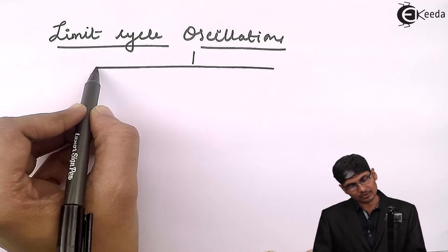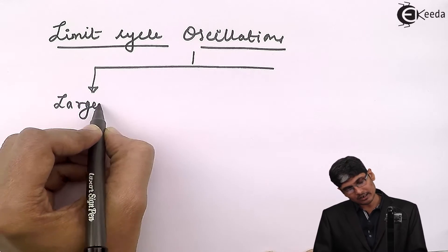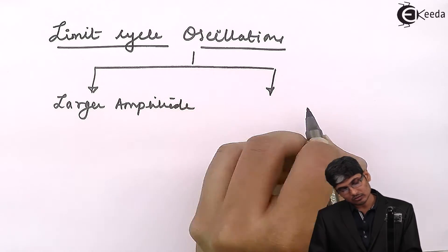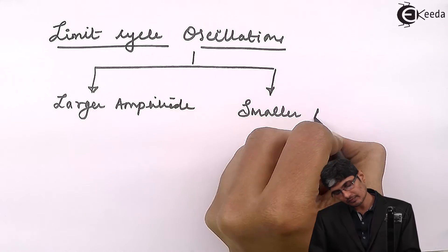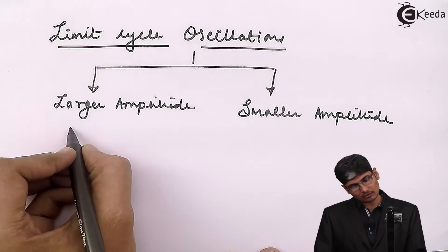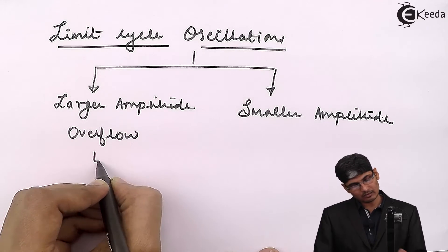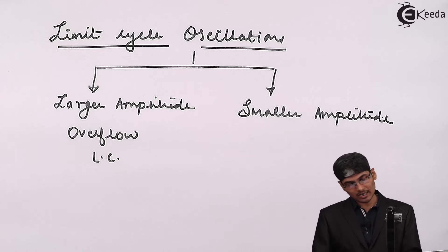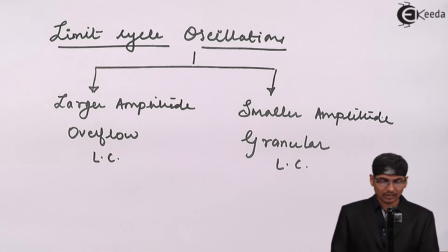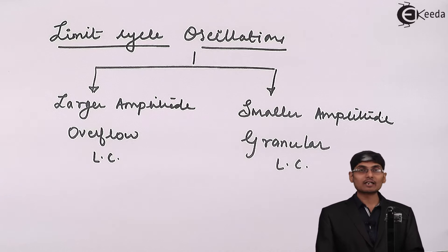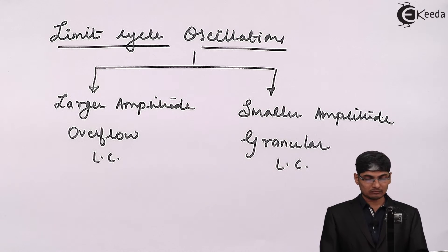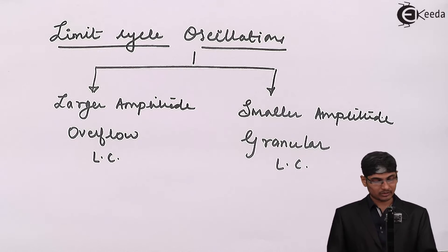Limit cycle oscillations are of two types: larger amplitude and smaller amplitude. Larger amplitude oscillations are called overflow limit cycle oscillations, and smaller amplitude oscillations are called granular limit cycle oscillations. Now let us see what granular type and overflow type limit cycle oscillations are.